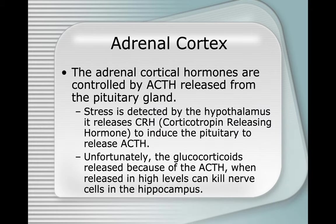The adrenal cortical hormones are controlled by ACTH released from the pituitary gland. Stress is detected by the hypothalamus, which releases corticotropin-releasing hormone to induce the pituitary to release ACTH. Unfortunately, when glucocorticoids are released in high levels, they can kill nerve cells in the hippocampus, which has to do with memory. If your stress comes from daily interactions with people rather than actual fight-or-flight situations, the stress causes significant damage — especially in your hippocampus.